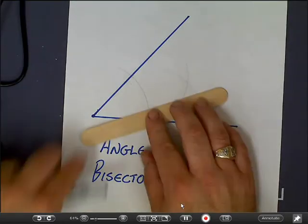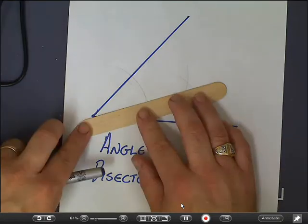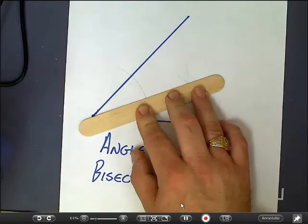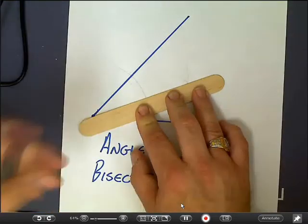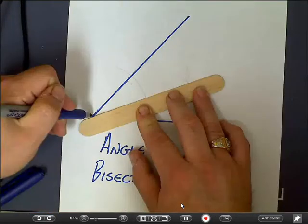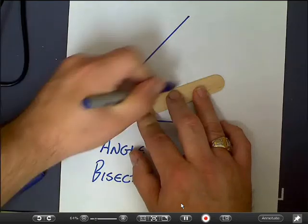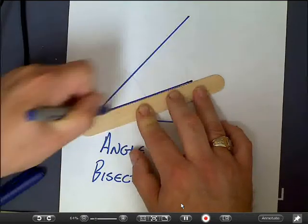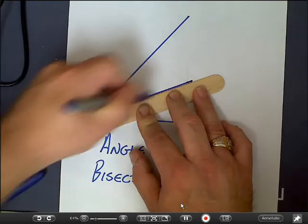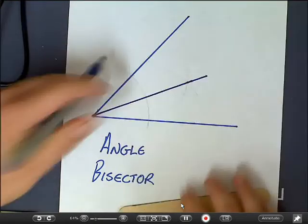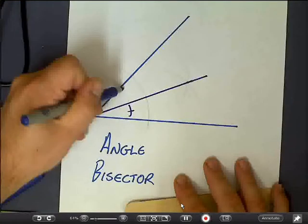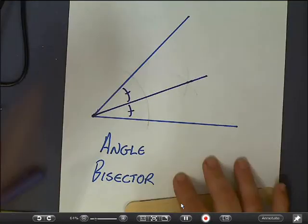If I then use my straight edge, starting at the vertex and going through the X, I should, if I've done this right, have two angles that are congruent — I should have bisected the angle.